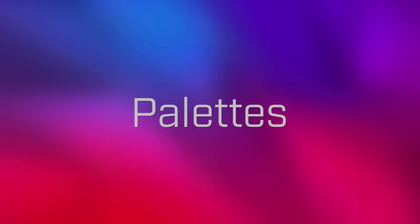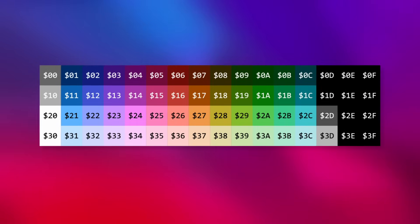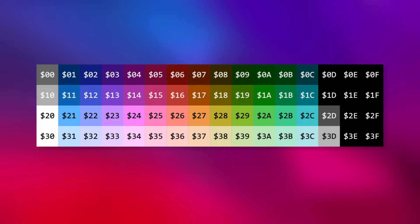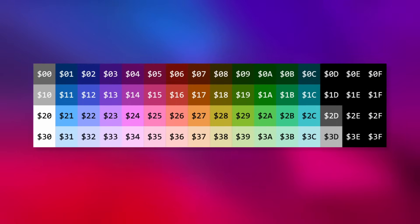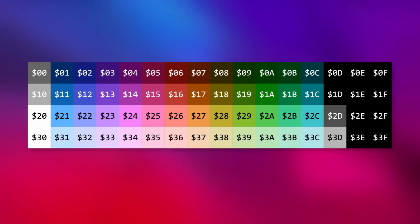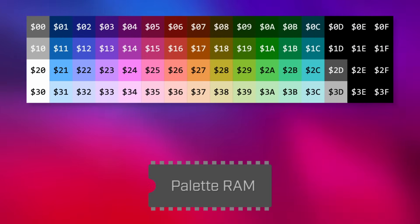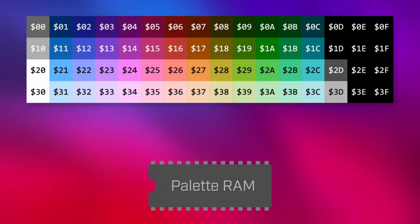The third section is used to store the active color palettes for a game. The PPU is capable of producing over 50 distinct colors, but it can't use all of those colors at the same time. Instead, this region is used to define up to 8 active palettes, containing four colors each.